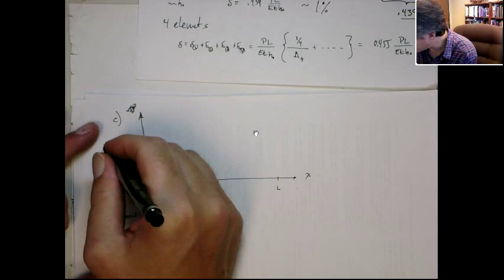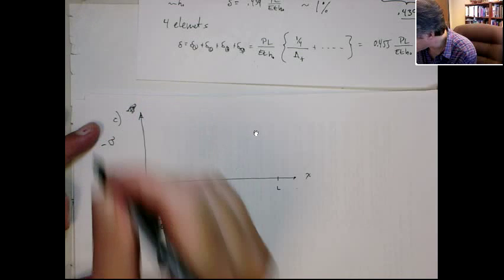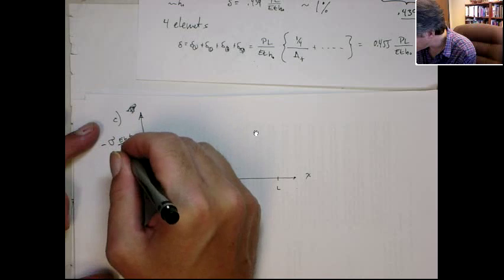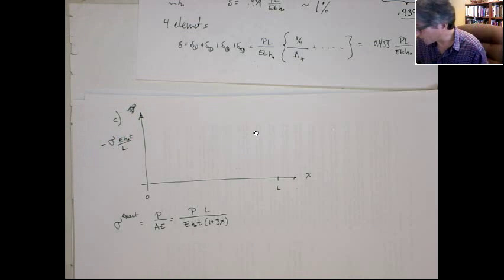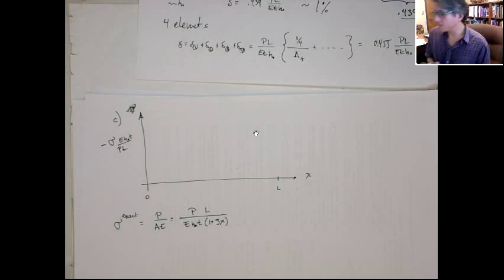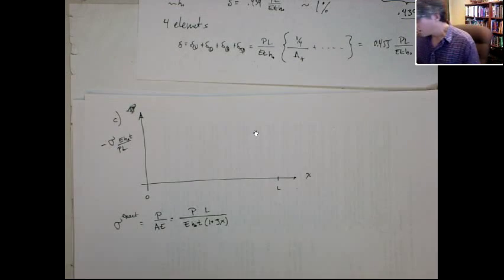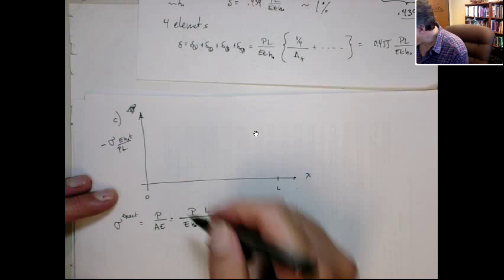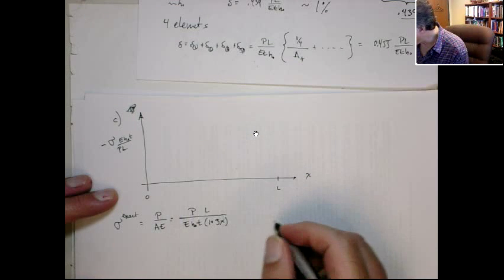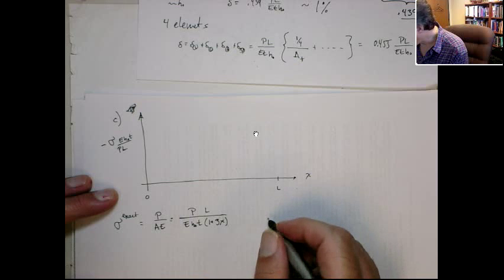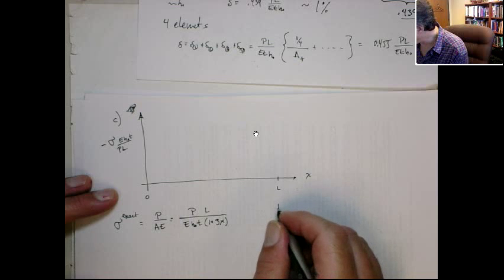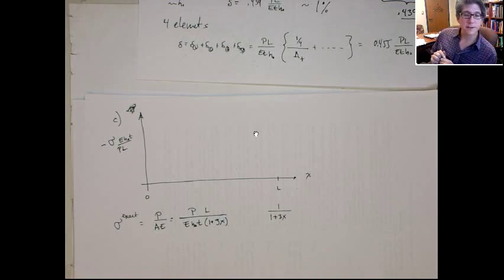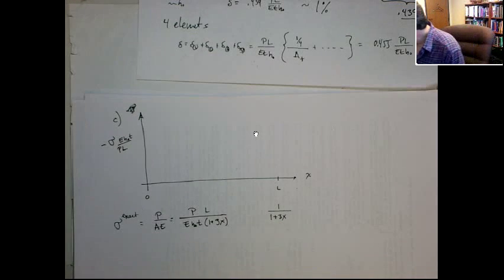So probably it would be good to actually plot this stress normalized by PL on E, H naught, T. So actually what I'm going to plot on this axis is minus the stress times E, H naught, T over L, just to normalize it, over PL to normalize it.